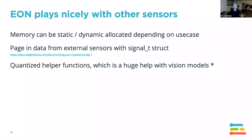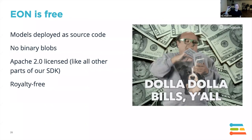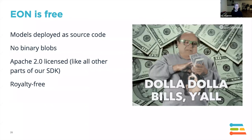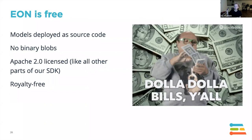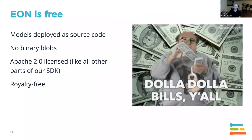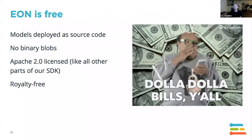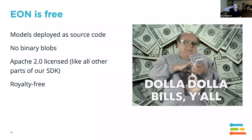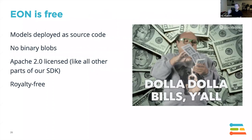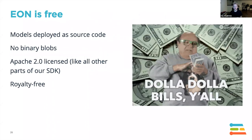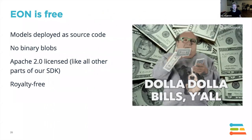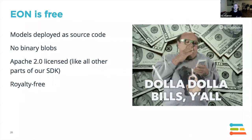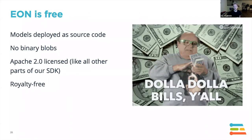We also play nicely with other sensors via our DSP library. Importantly, EON is free — it's not a commercial compiler. It's available for every user of Edge Impulse. Just go to your project, click deploy, enable EON, and that's it. You get the whole model as source code — not a single binary blob. You can look at the source code, modify it, and debug it any way you want. It's Apache 2 licensed and completely royalty-free.